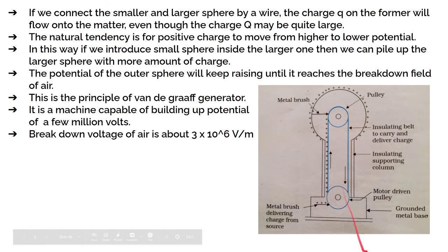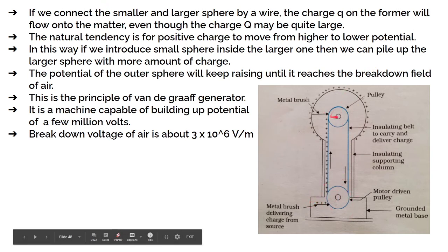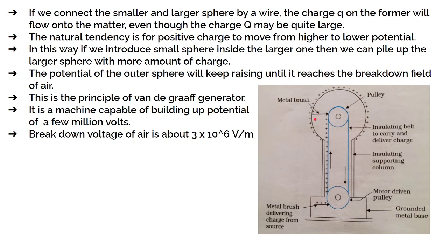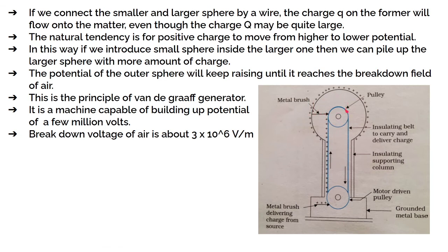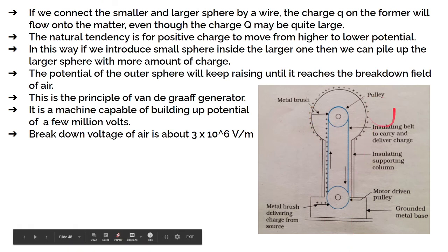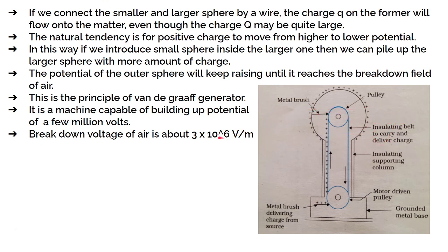In terms of machine construction, there is a motor and a driven pulley with a rubber belt. The rubber belt runs along an insulating column. A voltage source places positive charges on the belt. These charges are transferred from the lower potential to the higher potential on the outer sphere, which accumulates positive charge until the breakdown electric field of 3 × 10⁶ volt per meter is reached, increasing the potential.